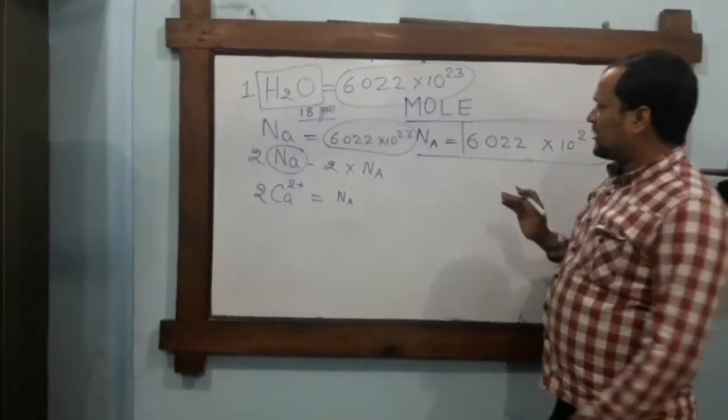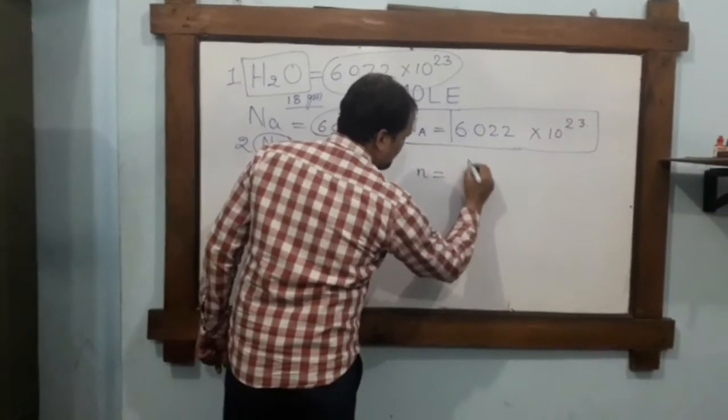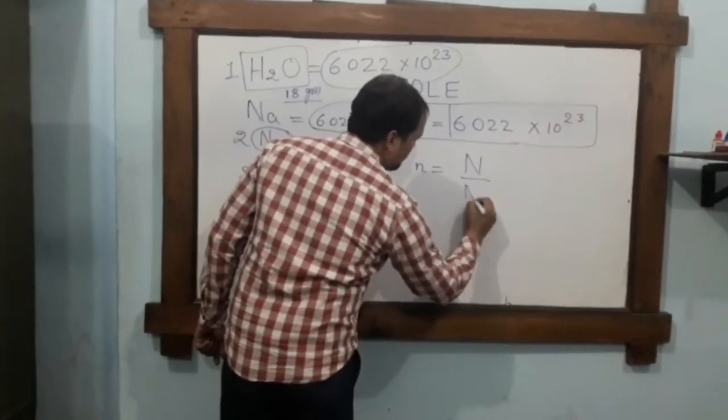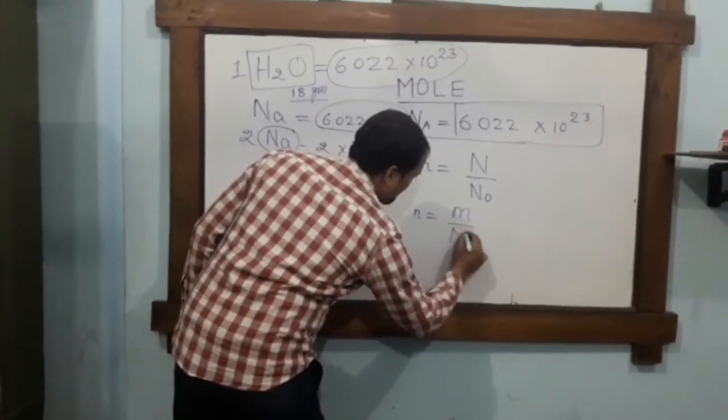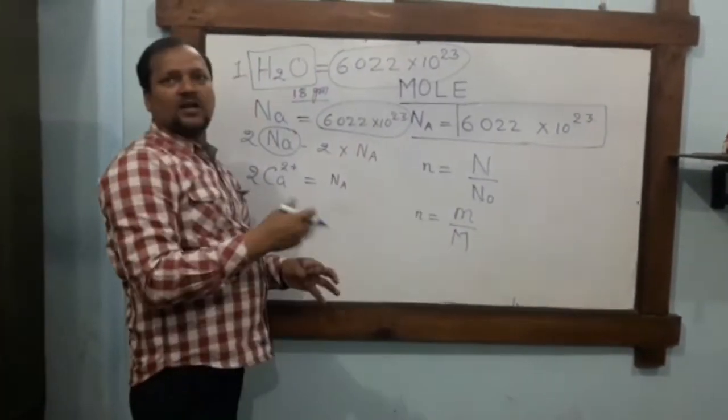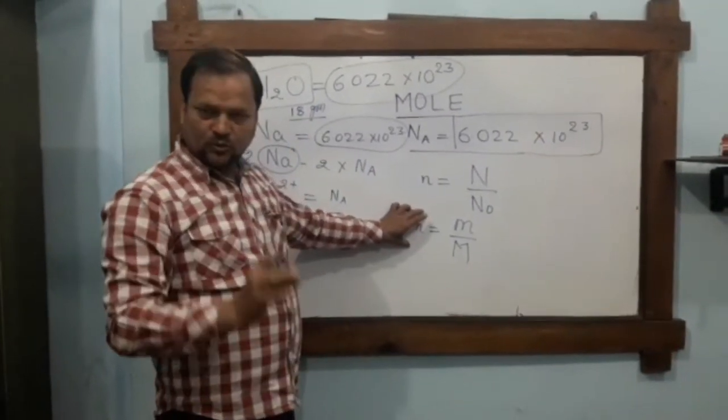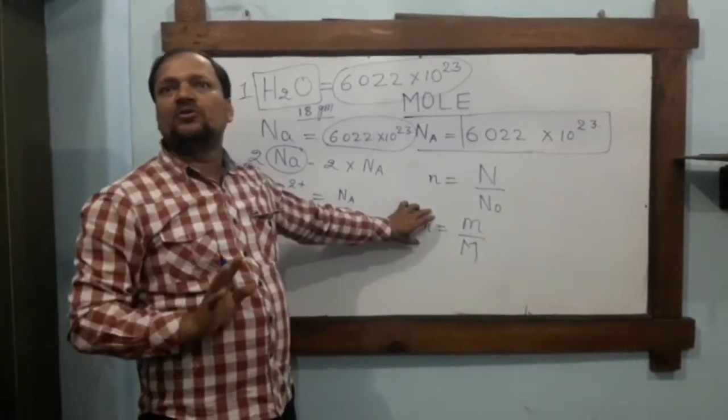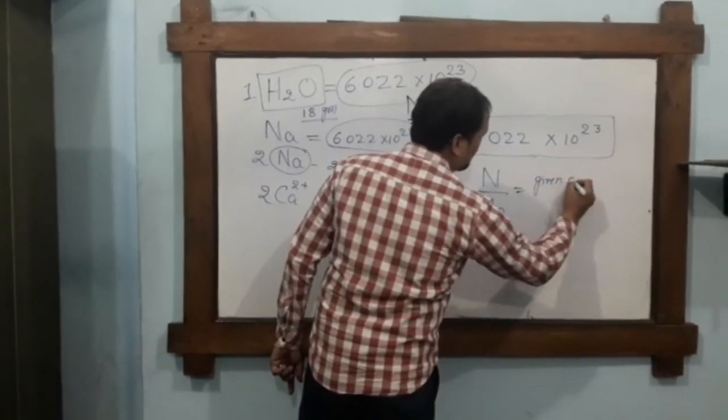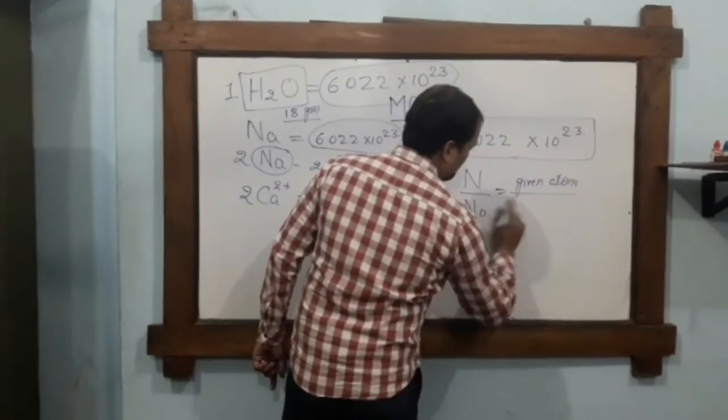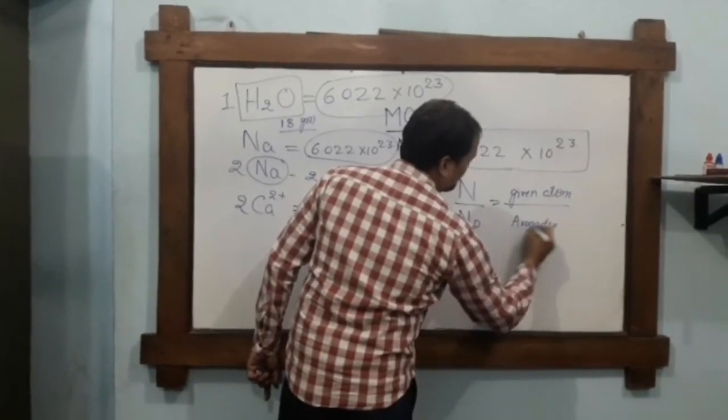The formulas are: n = N / N₀ and n = m / M. Here, small n is the number of moles of molecules, atoms, or ions. Capital N represents the given particles or molecules provided, and N₀ is Avogadro's number, the fixed value of 6.022 × 10²³.